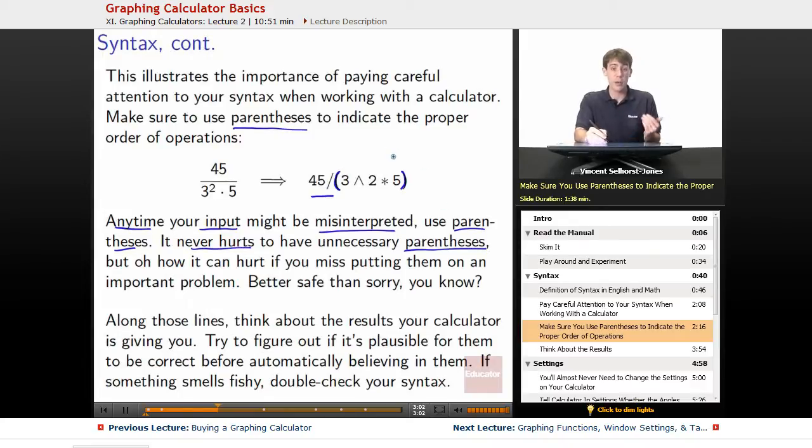For example, with this, the 3 caret 2 times 5, we might be worried that it's going to interpret as 3 exponent 10. So we might want to put 3 caret 2 in parentheses as well, and then multiply by 5, that whole thing in parentheses, and we're dividing 45 by that whole thing. Now, as you work more with your calculator, you'll start to get a sense for exactly how the syntax works, and you'd realize it only interprets the very next thing as being what the exponent is. But it takes a little bit of a while to figure out exactly how it works, and once again, you're better safe than sorry, so more parentheses are always a good thing if you're not sure.